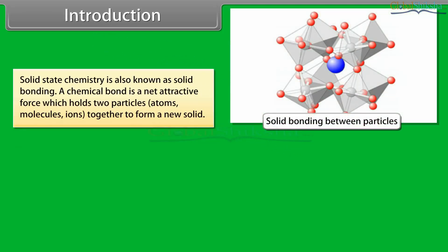Solid state chemistry is also known as solid bonding. A chemical bond is a net attractive force which holds two particles—atoms, molecules, ions—together to form a new solid.